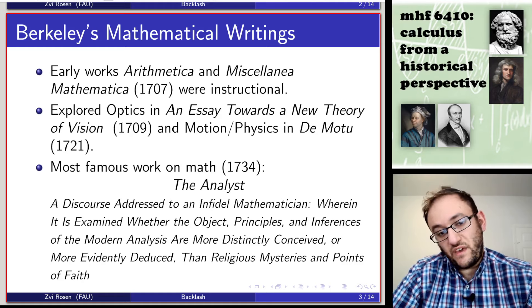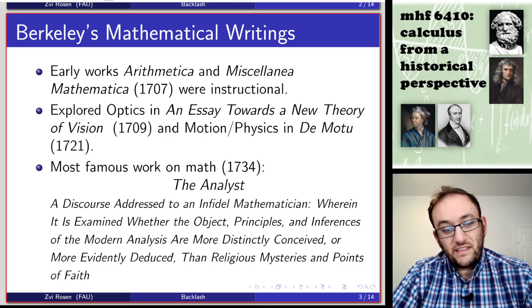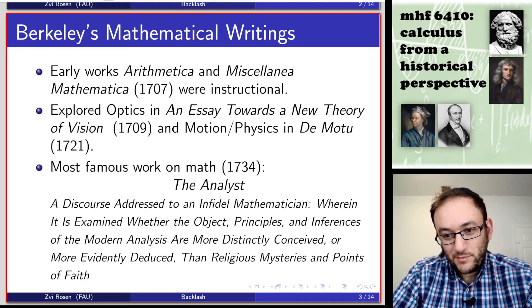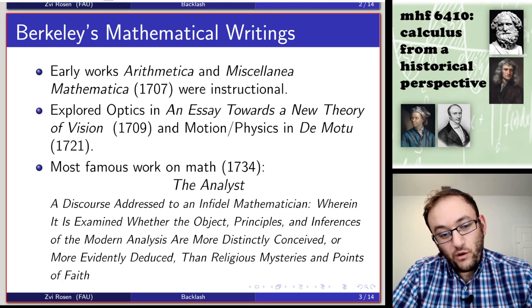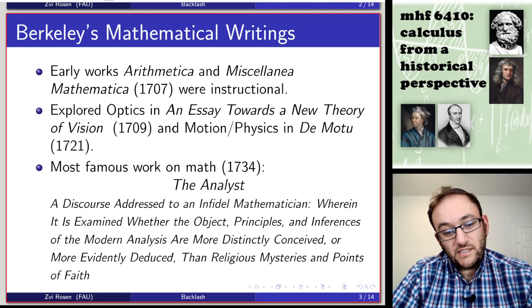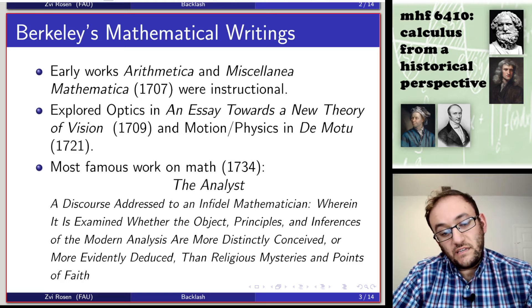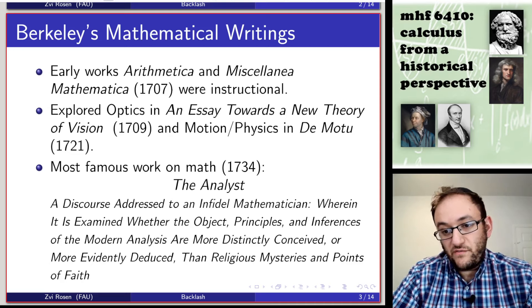But his most famous work on math was published in 1734, and that was called The Analyst. And it has this monstrosity of a subtitle: a discourse addressed to an infidel mathematician wherein it is examined whether the object, principles, and inferences of the modern analysis are more distinctly conceived or more evidently deduced than religious mysteries and points of faith.